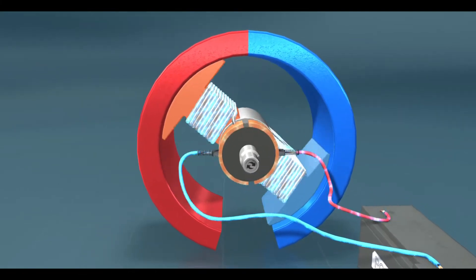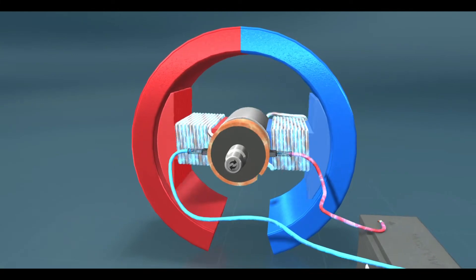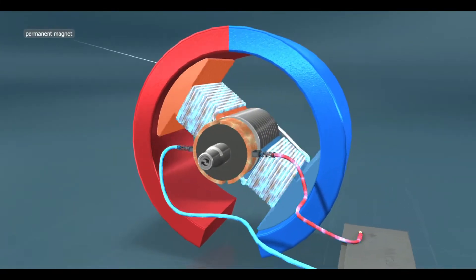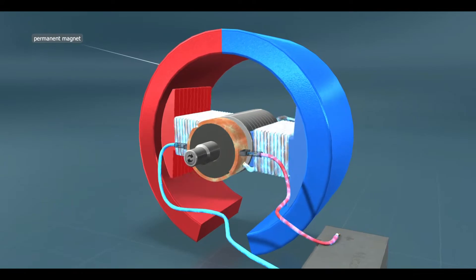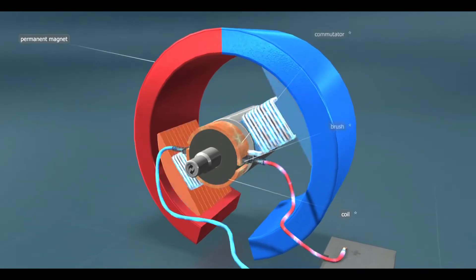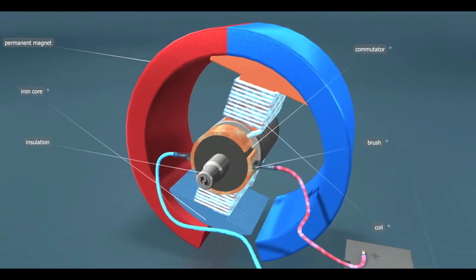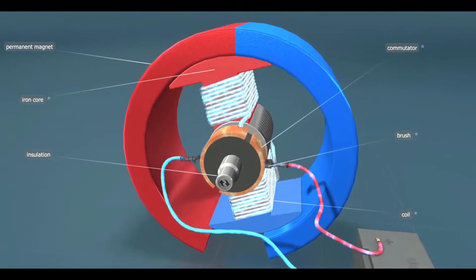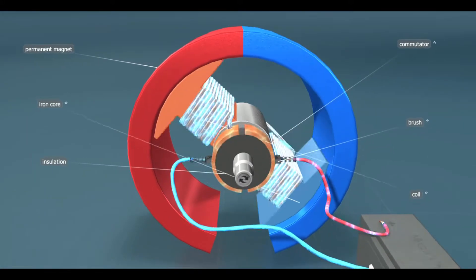As their name suggests, DC motors are powered by direct current. Their stator is a permanent magnet, and their rotor is an electromagnet. The current is applied to the rotating coil through a sliding contact and carbon brushes.